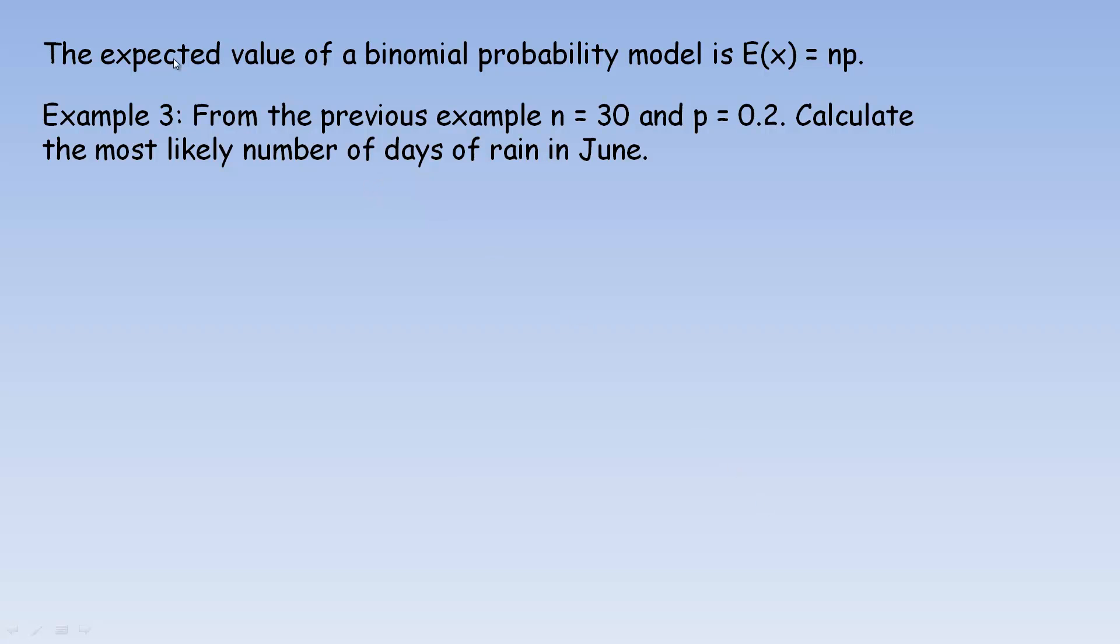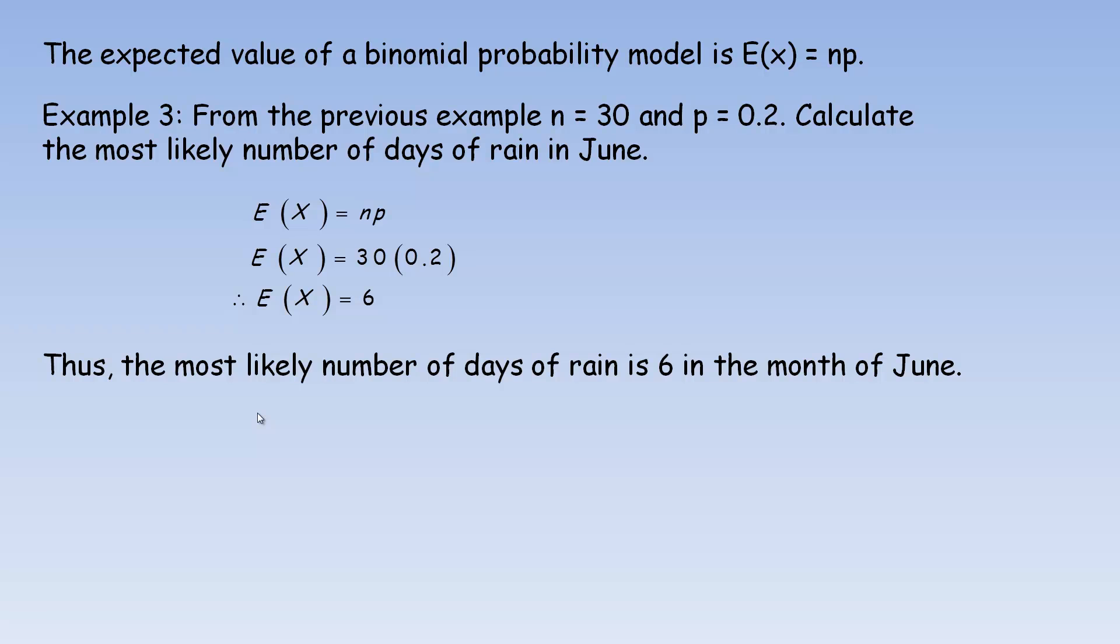One last part with another example. The expected value of a binomial probability model is the number of trials times the probability of success. So np, very simple little formula. So from the previous example, n was 30 days in June, and the probability of rain any day is .2. So you're asked to calculate the most likely number of days of rain in June. So np, we'd multiply 30 by .2, which is 6. So that means that the most likely number of days of rain is 6. That would be the number of days with the highest probability as well. That's what expected value means. It's the most likely outcome. And that's the end of the lesson.